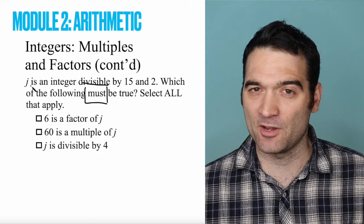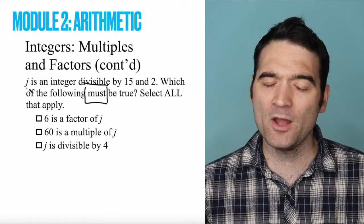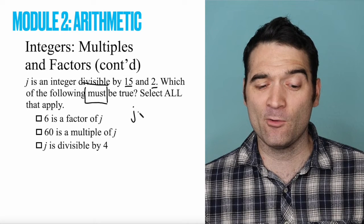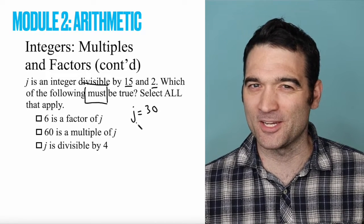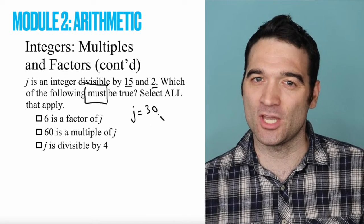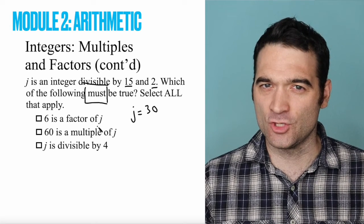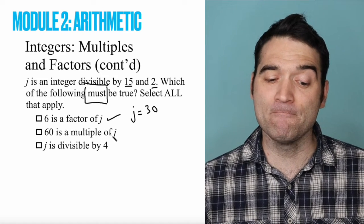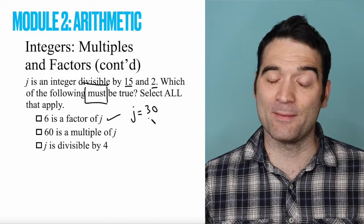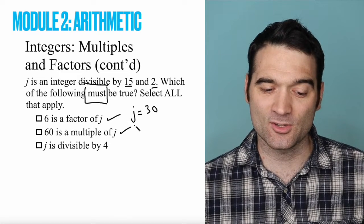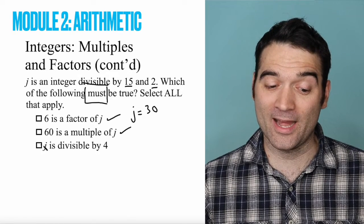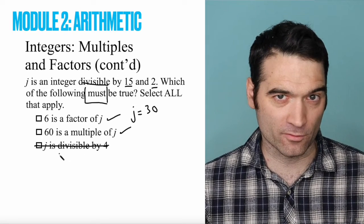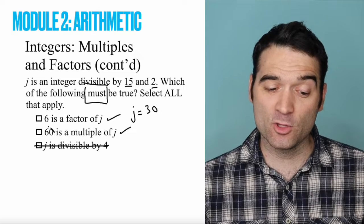Let's start by testing out a number, and I'm guessing this is probably what you did on your own, right? We'll say, what could J be? J could be a number divisible by 15 and 2. How about 30? Did you pick 30? I bet you did. Great number to pick, right? So let's just say that J is 30, right? Is 6 a factor of J? Is 6 a factor of 30? Yeah. 6 goes into 30. So check there. Is 60 a multiple of J? Can I get 60 by multiplying 30? Yeah. 30 times 2 makes 60. So that's also true. Is J divisible by 4? No, right? And so immediately, I just found a case where this is false. Game over for that answer option. And at this point, you might have selected these two.